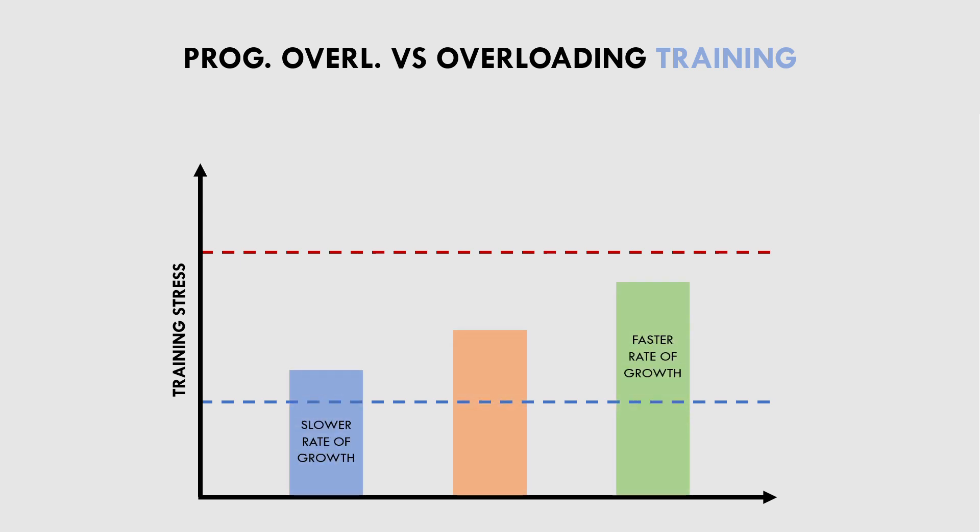Training at the lower end of this range will result in a slower rate of muscle growth, while training at the higher end will result in a faster rate of growth. In relation to hypertrophy training, training stress will be determined by factors like volume, proximity to failure, exercise selection, technique, and more. These are the variables that will influence the rate at which we make hypertrophy gains.